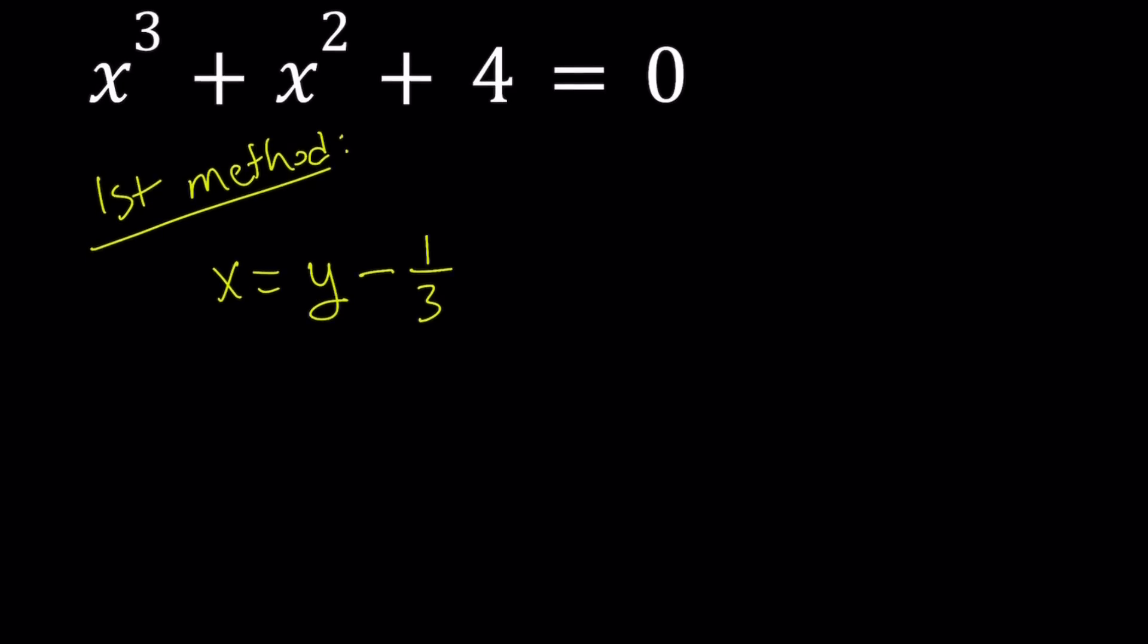Let's go ahead and do the replacement. This gives us y minus 1 third to the third power plus y minus 1 third squared plus 4 equals 0. The constant is not going to change. If you go ahead and expand it and simplify the terms, you can definitely do that. It's fairly easy.